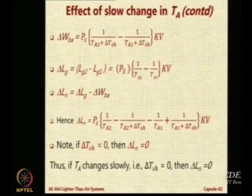So, 1 by 288 minus 1 by 289 minus 1 by 288, how much is delta LG? 249 plus or minus, so reduction. Then what about delta Ln? That will be 0. And what about the weight of the ballonet air?